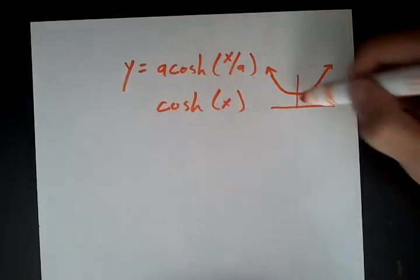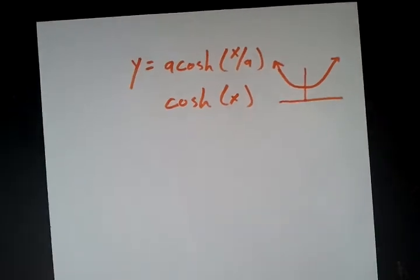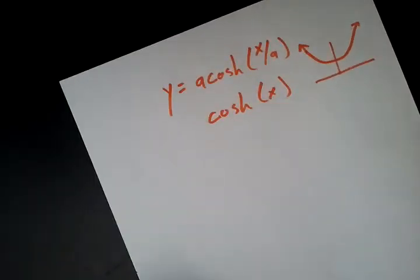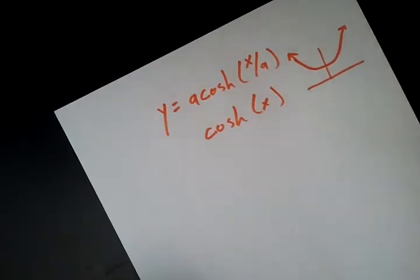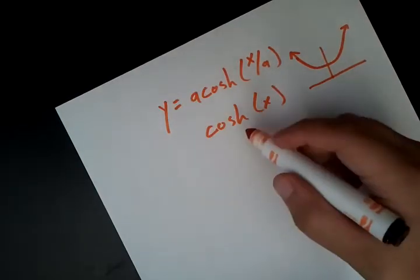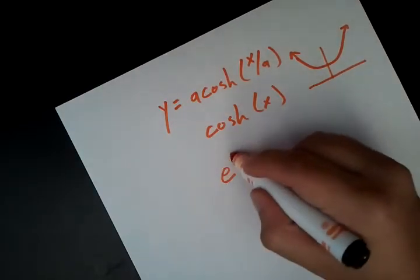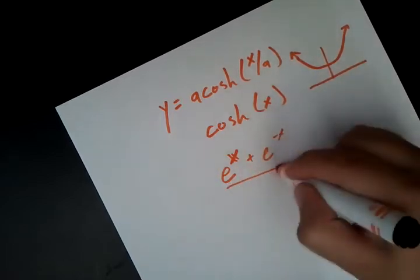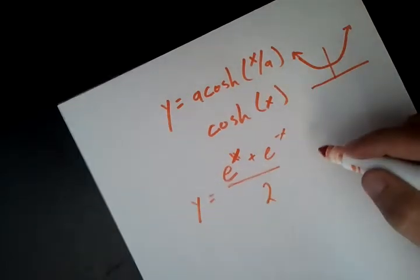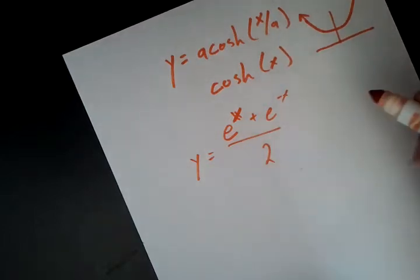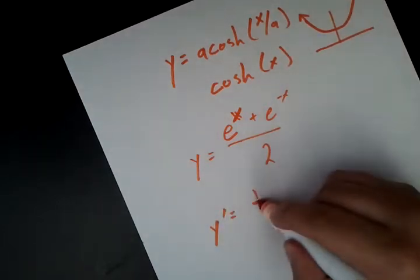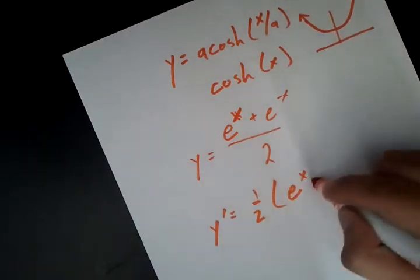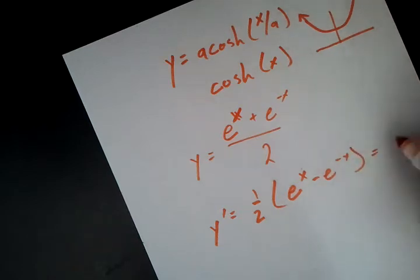So it's definitely not y equals x squared, because it doesn't even touch the origin. Now let's try to find the derivative of it. So we can write out cosh x as what it really is: e to the x plus e to the negative x all over 2. And that's the definition of cosh x. We can find the derivative easily just using e to the x derivatives. So we get this as the derivative. And that happens to equal to sinh x.